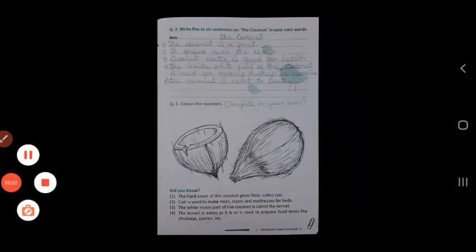So if you look on the outside of the coconut, can you see all this brown hair? This hard hair or hard cover of the coconut gives us a fiber which we call coir.